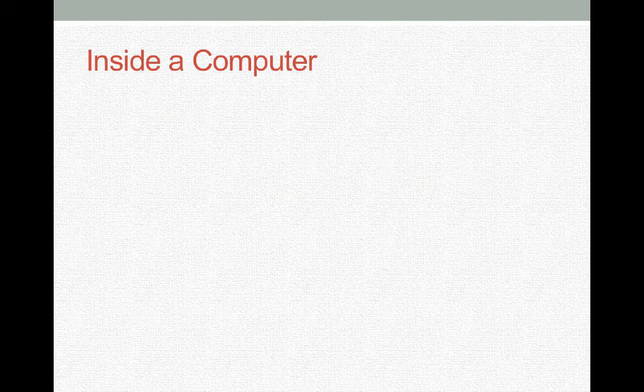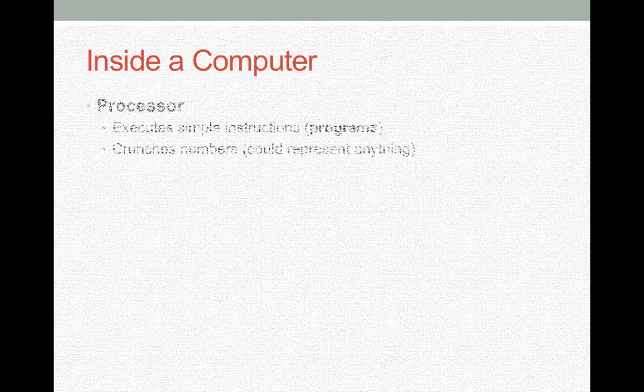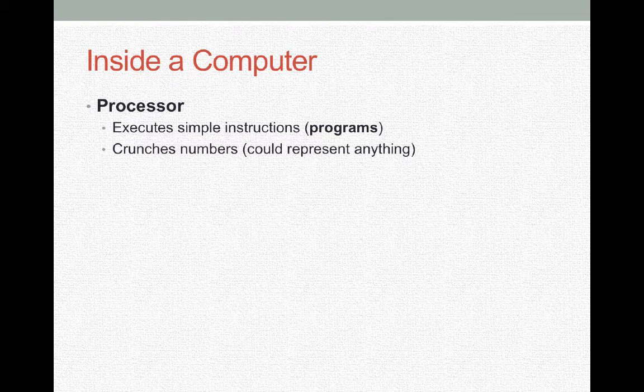Inside a computer, we have the computer processor. This executes simple instructions, runs programs, and crunches numbers — things like addition, subtraction, and multiplication. These numbers could represent anything; the processor is just there to manipulate them.